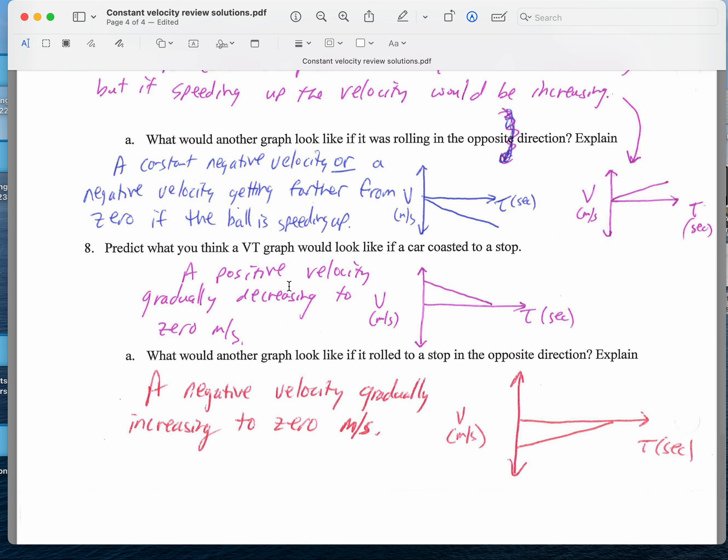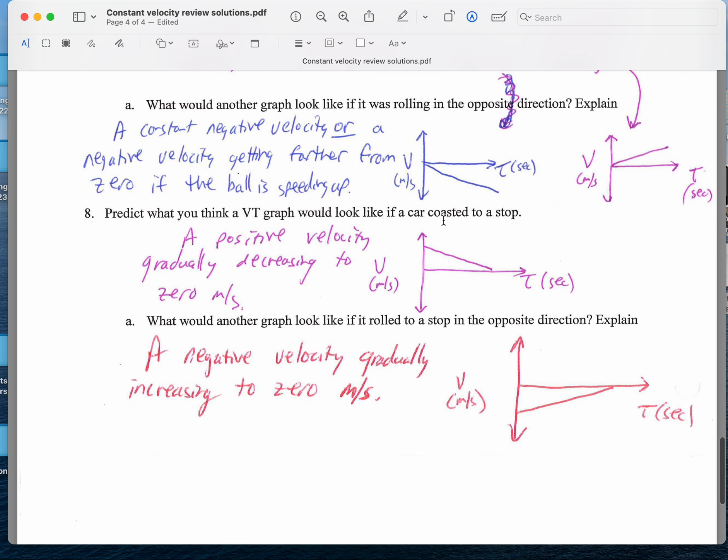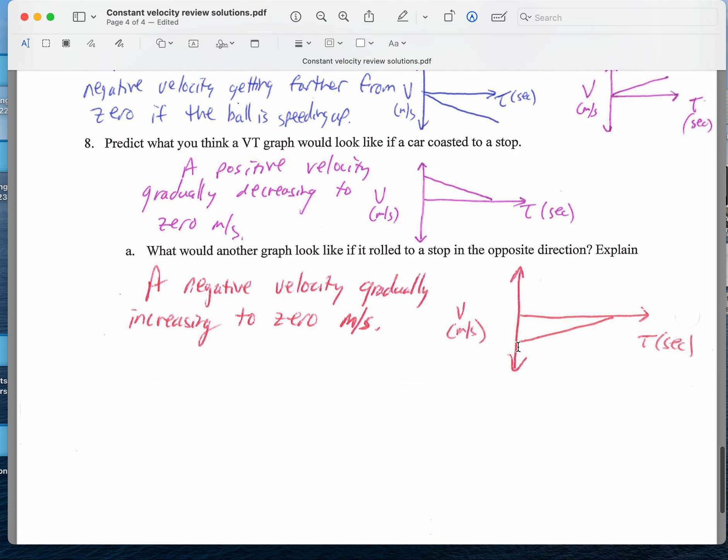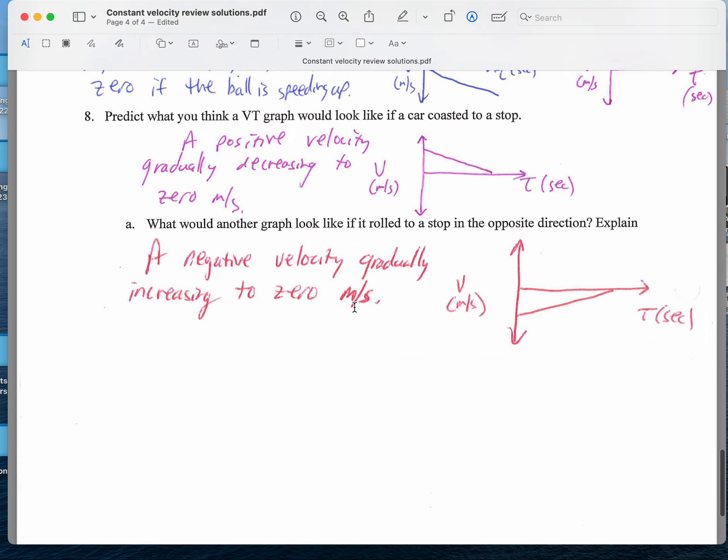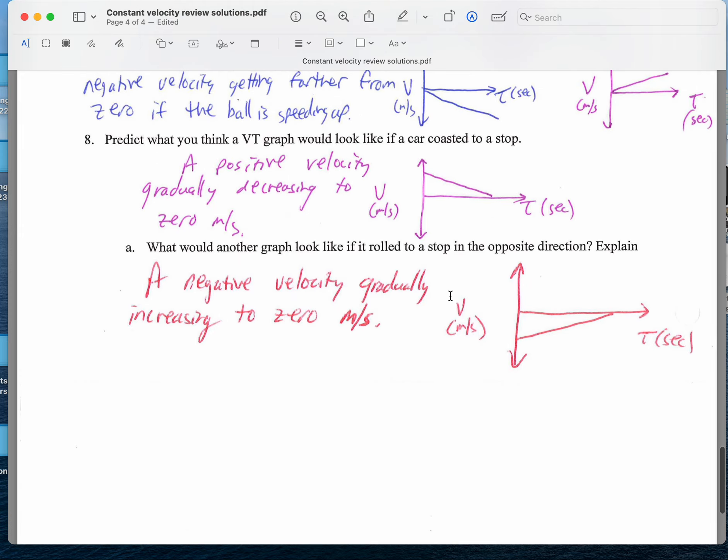What do you predict a velocity time graph would look like if a car coasted to a stop? That does say that it's stopping. So that basically says you've got a velocity and it's going down to 0. Here, if it's coasting to a stop in the opposite direction, we can think of it as negative. That's going up towards 0. Either way, in these cases, if it ends at a stop, the velocity graph should end at 0 at the end. Again, this doesn't particularly say which direction it's going, so you could interpret those a little bit differently, but it should end up at 0 meters per second.